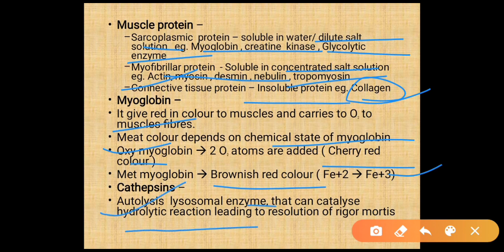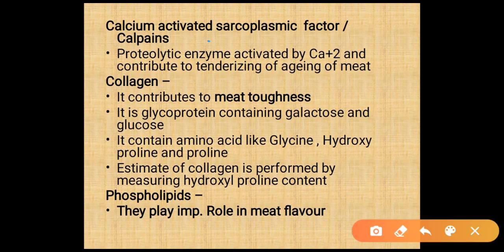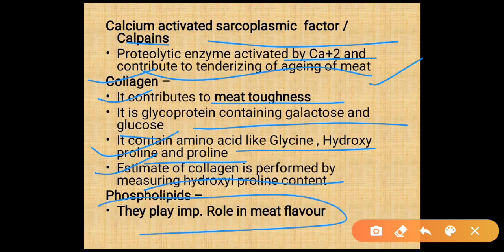Cathepsins are lysosomal enzymes that catalyze hydrolytic reactions leading to the resolution of rigor mortis. Calcium-activated sarcoplasmic factors (calpains) are proteolytic enzymes activated by calcium and contribute to tenderizing during aging of meat. Collagen contributes to meat toughness; it is a glycoprotein containing galactose and glucose, and contains amino acids glycine, hydroxyproline, and proline. Collagen estimation is performed by measuring hydroxyproline content. Phospholipids play an important role in meat flavor.